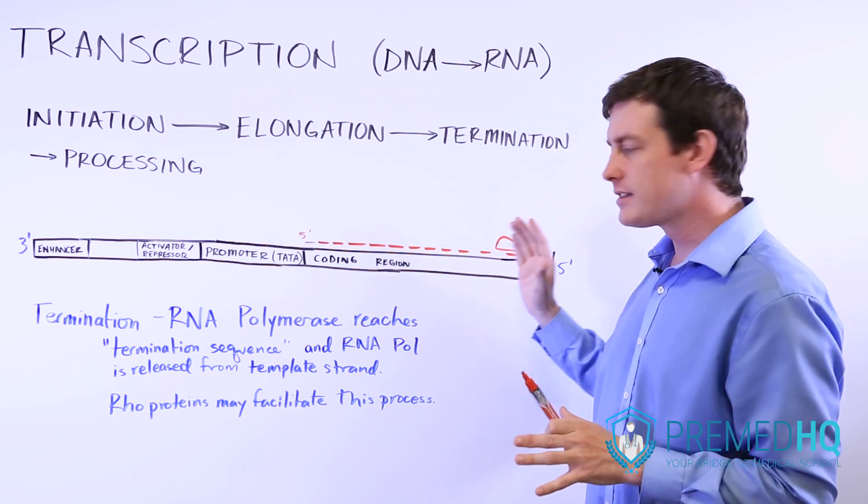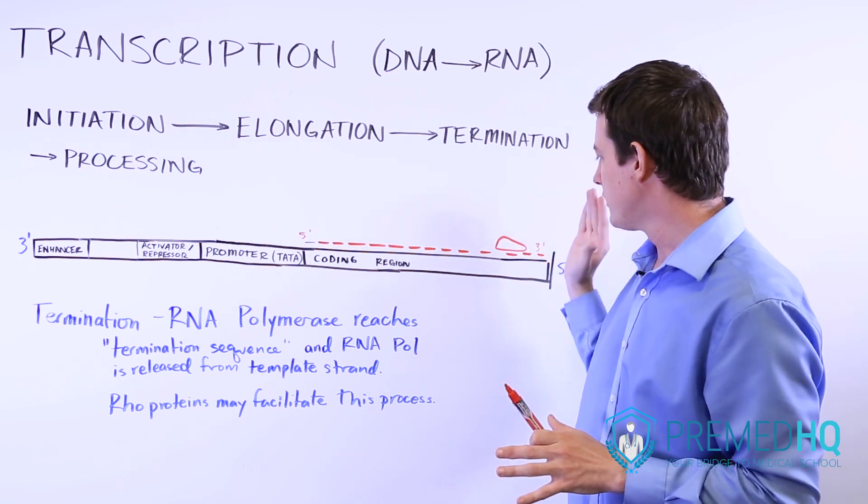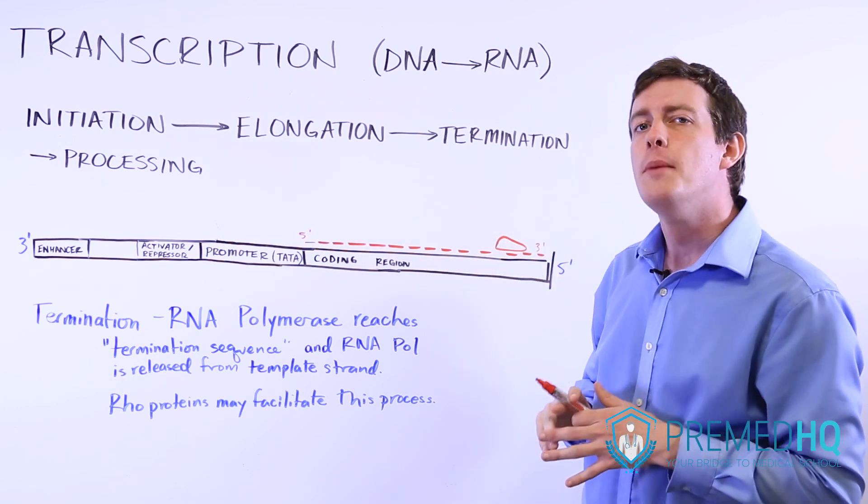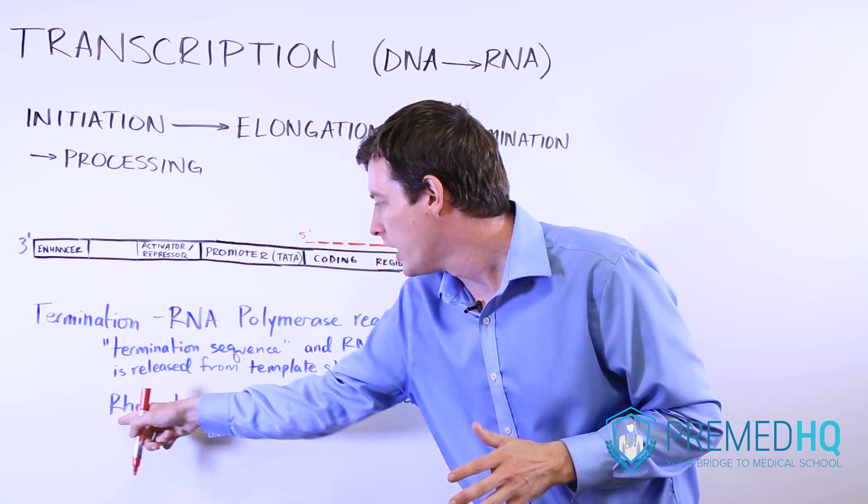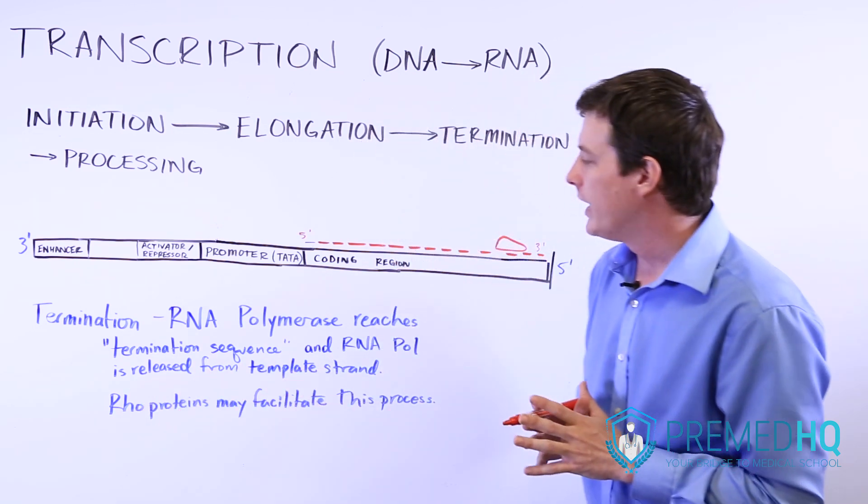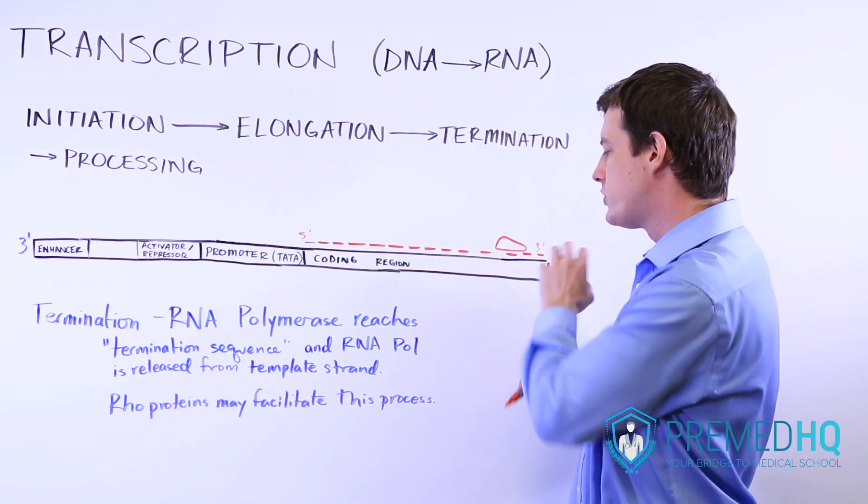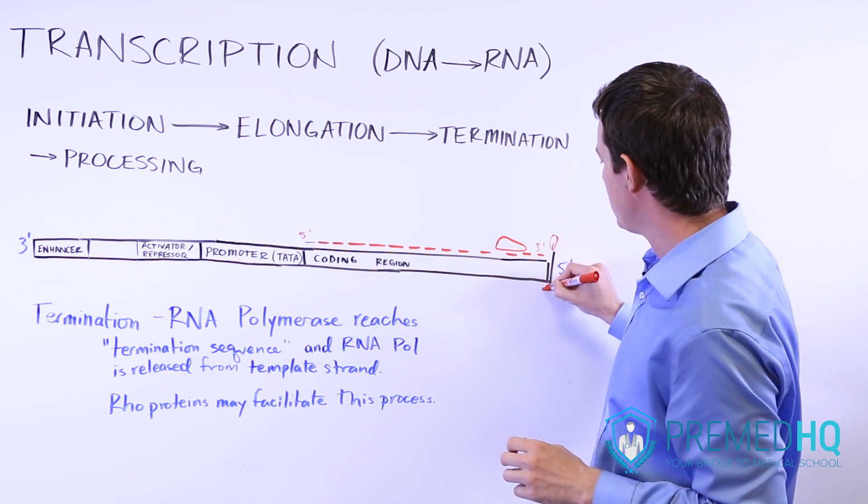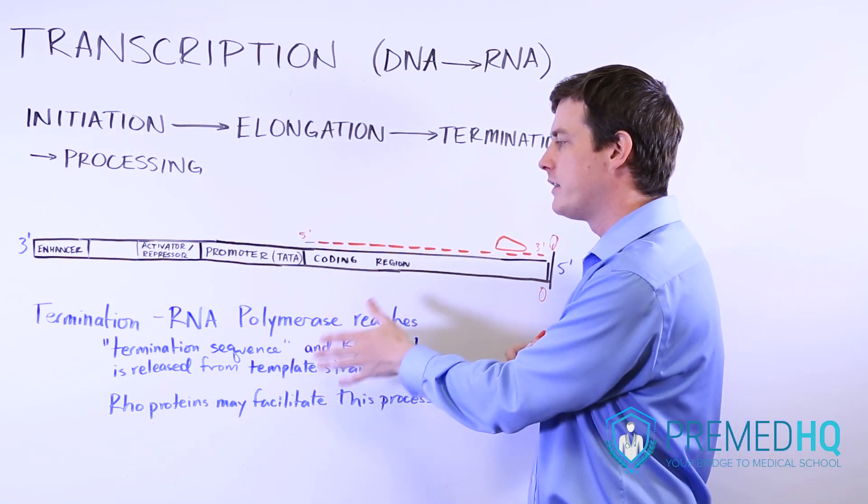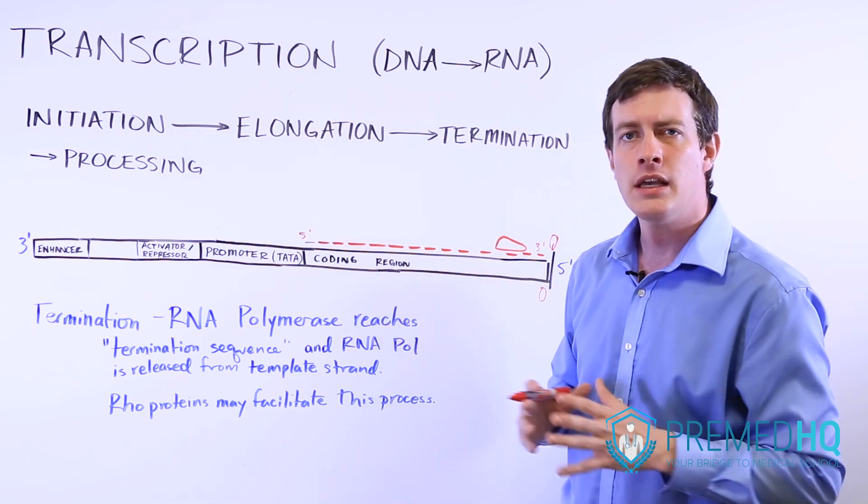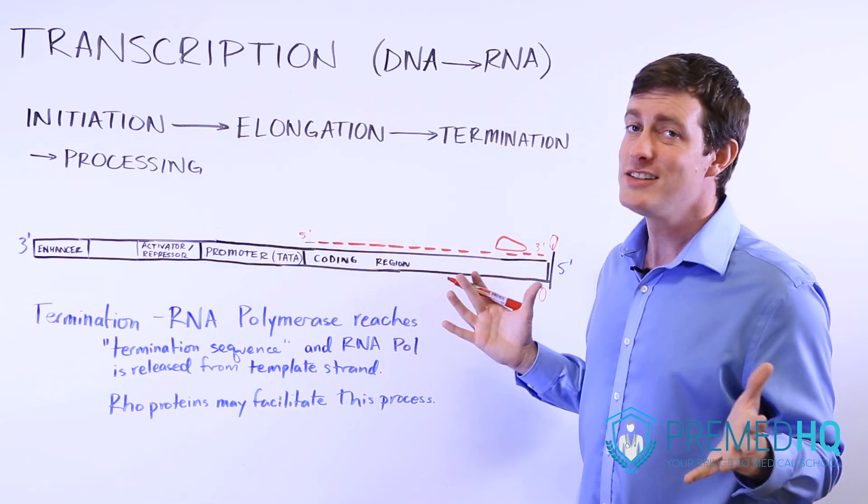There is a DNA sequence that signifies that termination is about to occur, but there can be some proteins known as rho proteins, rho after the Greek letter, and these can sometimes bind to the termination sequence and they can facilitate the process of the RNA polymerase leaving.